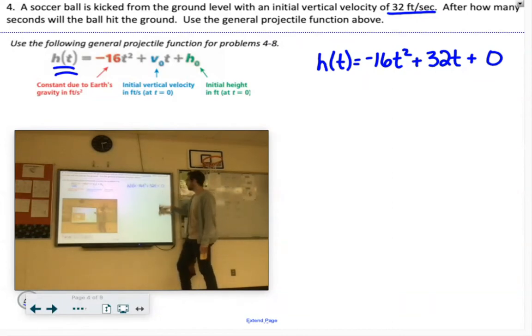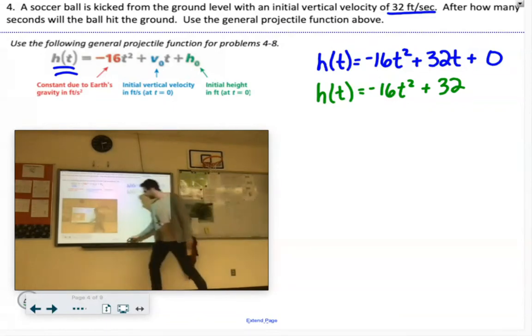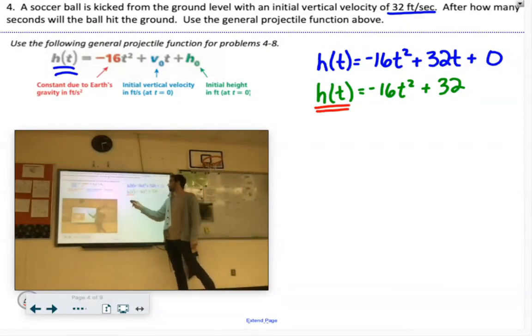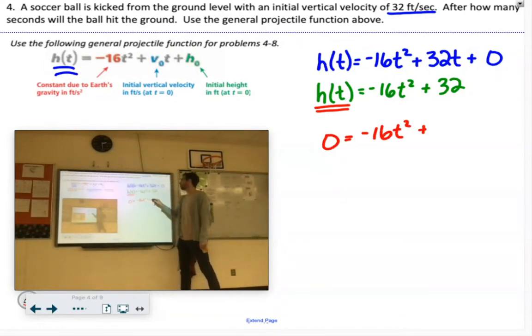So if we just clean up that plus zero, we can just get rid of that. Now if we're solving this here, we want to know when it will hit the ground again. So the height will come back to zero. Zero equals negative 16t squared plus 32t.